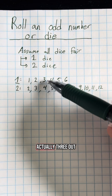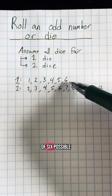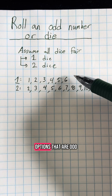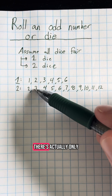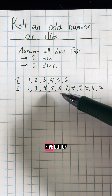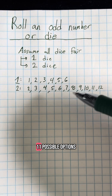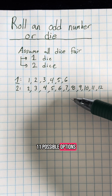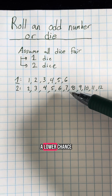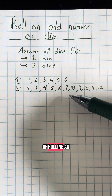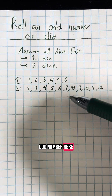In the comments everybody was saying that this was a horrible idea because if you have one die there are three out of six possible options that are odd, but if you roll two dice there are only five out of eleven possible options that are odd, so you have a lower chance of rolling an odd number.